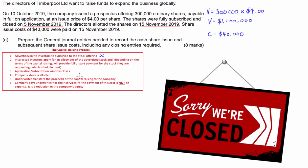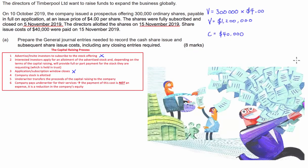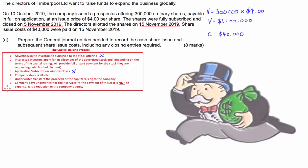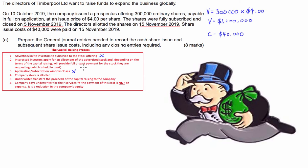The next one is the application window closes — there always has to be an end date. The next step is the company stock is allotted, so people are given their shares, and that is going to require an accounting entry. The next thing is the investment bank or the underwriter transfers the proceeds of the public offering to the company — in this case it's going to be the $1.2 million. And finally, the company pays the underwriter for their services. This is not an expense — it's a reduction in the company's equity.